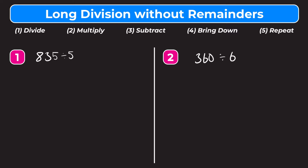835 is the number being divided, or the dividend, so that goes under our division bar. 5 is the number we're dividing by, or the divisor, so that goes on the outside. We write our division bar, put 835 under it and 5 on the outside. Now let's go to step one, which is divide.